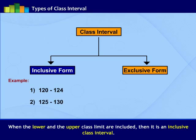For example, in the first class interval 120 to 124, both the heights 120 as well as 124 are included. In the second class interval 125 to 130, both the heights 125 and 130 are included and so on. Hence, they are inclusive type of class intervals.